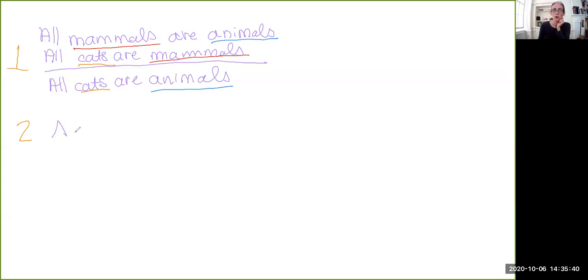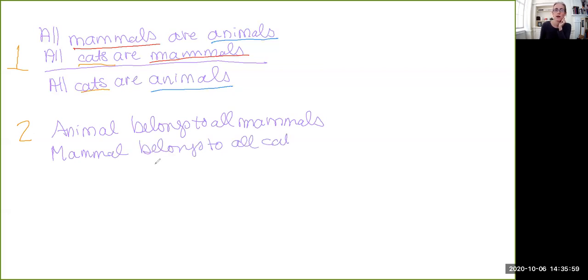So what we can say is that the term animal belongs to all mammals. It's a property that all mammals have. And we can also say that mammal belongs to all cats. Conclusion, animal belongs to all cats. So this is the same argument as the previous one. It's just represented in a different way, but still in English.